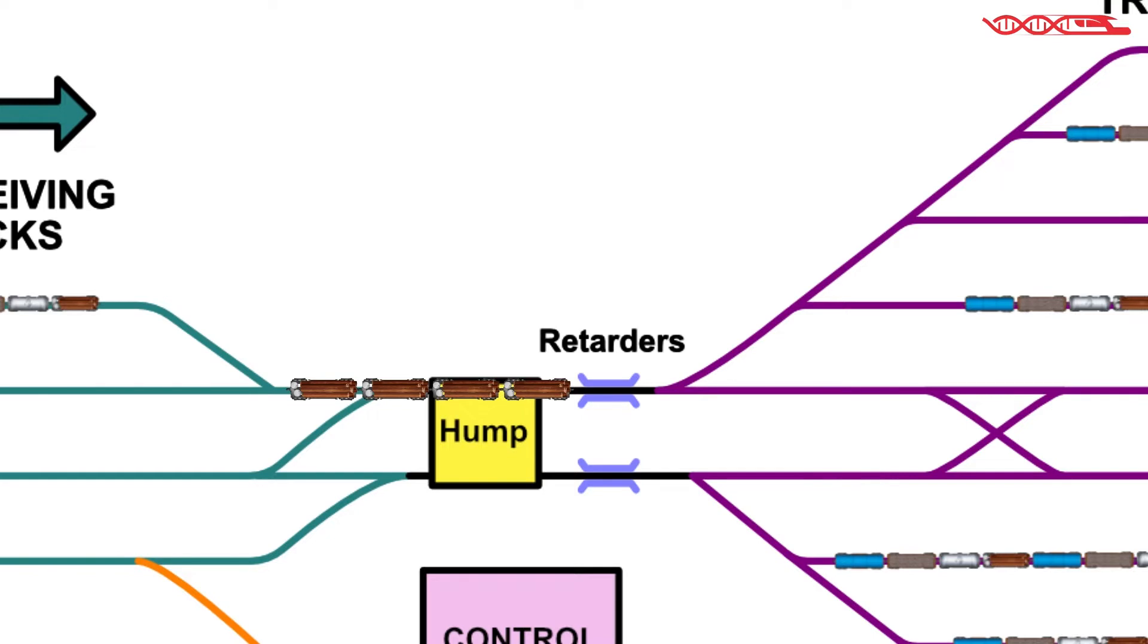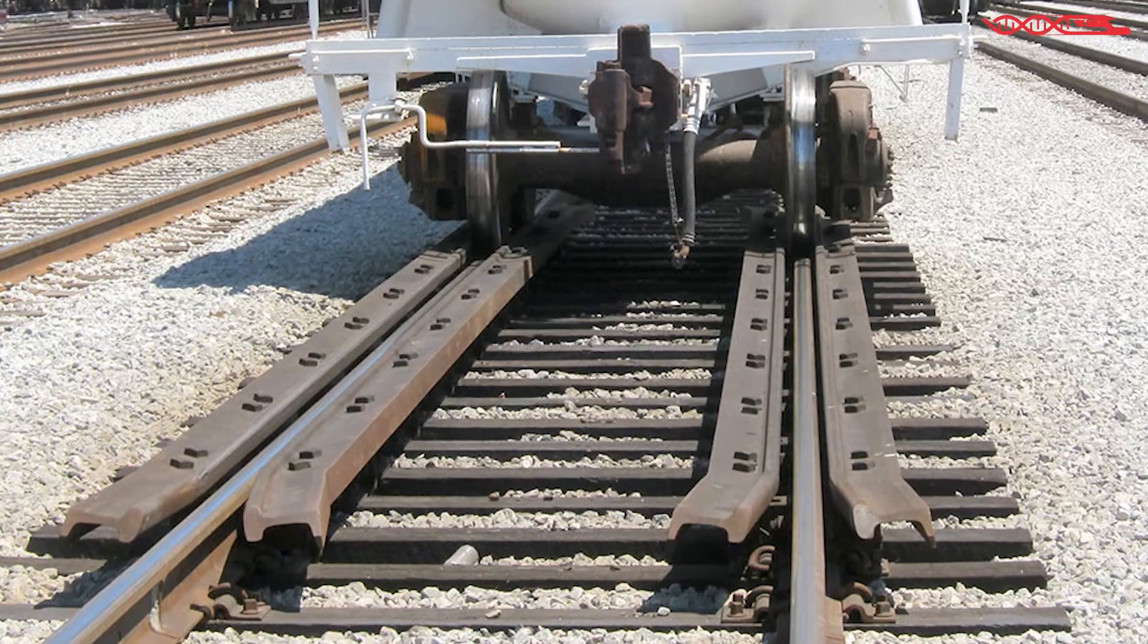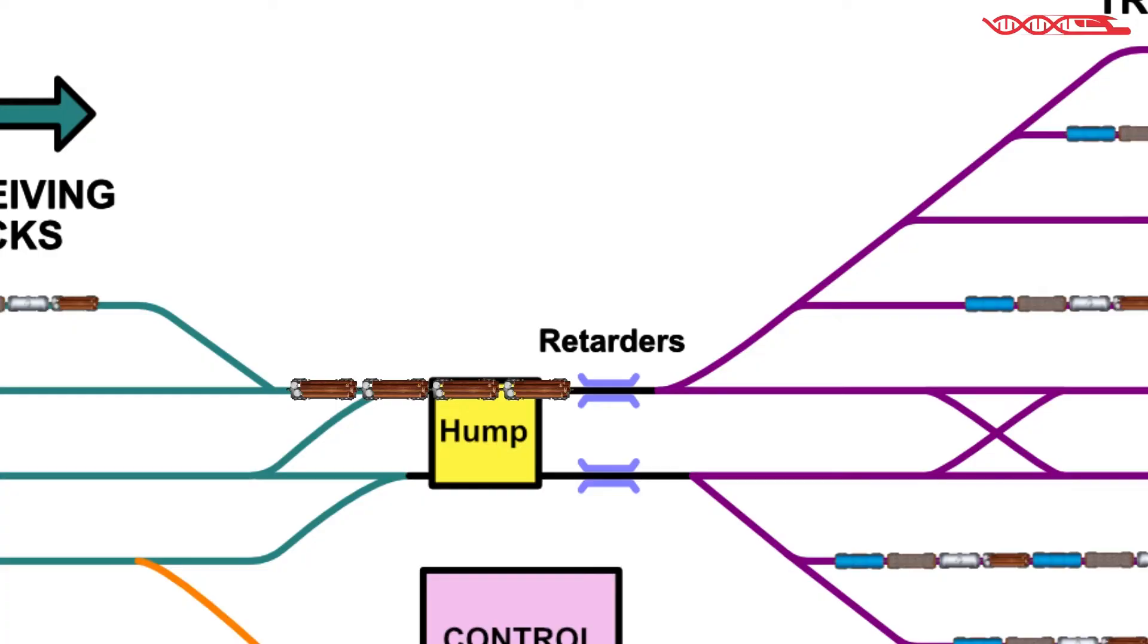In order to prevent this, after the hump but before the turnout, station brakes are installed, specifically called retarders. The main task of these brakes is to reduce the speed of rail cars before they approach the turnout and after that on some of the tracks in the classification part.